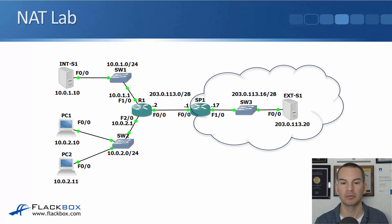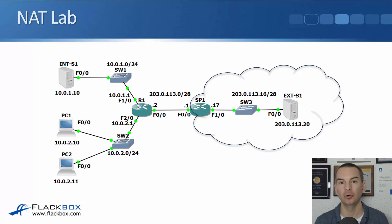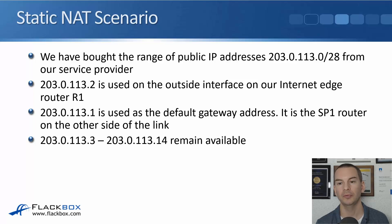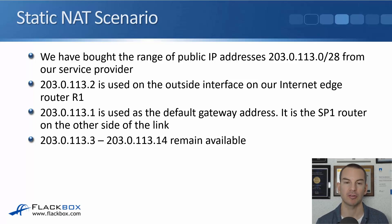For the examples, we've got external S1 over on the right. That is an external server that I'm just going to use for testing and for checking that NAT is working. So our static NAT scenario: we've bought the range of public IP addresses 203.0.113.0/28 from our service provider. It's a slash 28, so that gives us 14 public IP addresses.